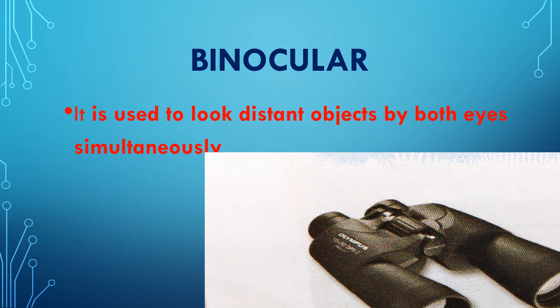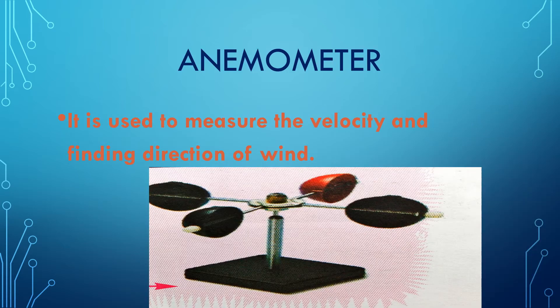The next one is binoculars. Binoculars are used to look at distant objects with both eyes simultaneously. If you want to see stars and other distant objects in space, scientists use binoculars. With binoculars, we can see with both eyes simultaneously.